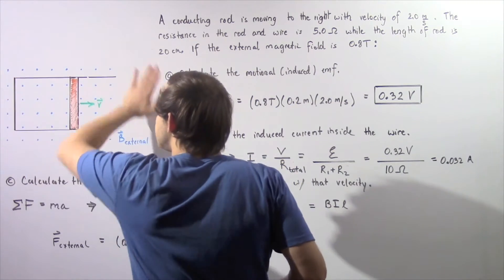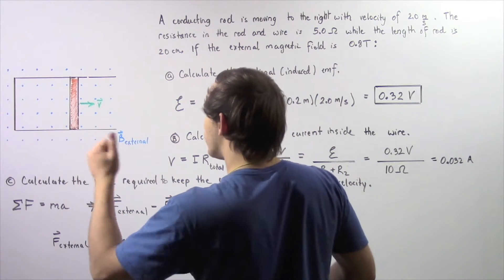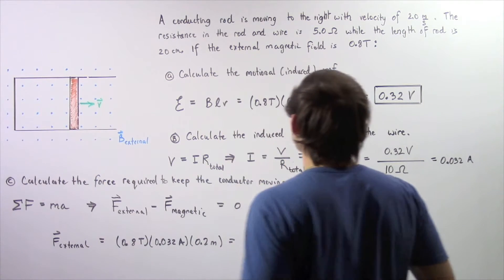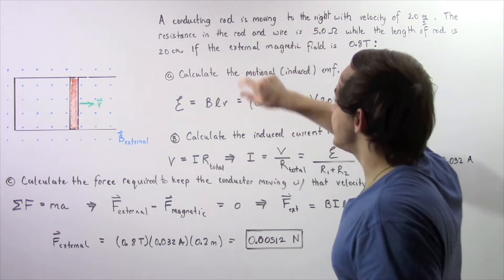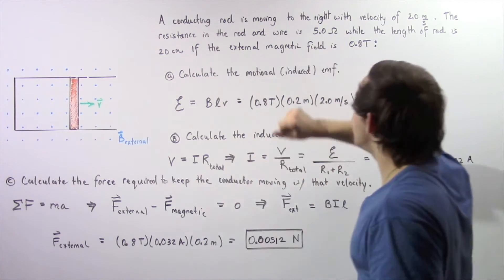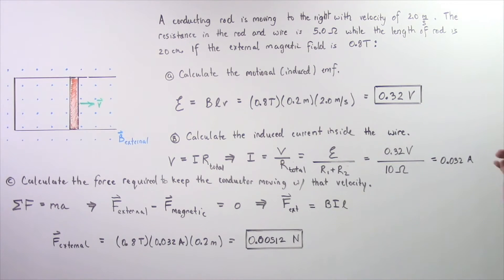The entire system is found within an external field B that points out of the board as shown by these blue dots. Now the resistance in the rod, in the conducting rod and in the wire, is given to be 5 ohms, while the length of the rod is 20 centimeters.